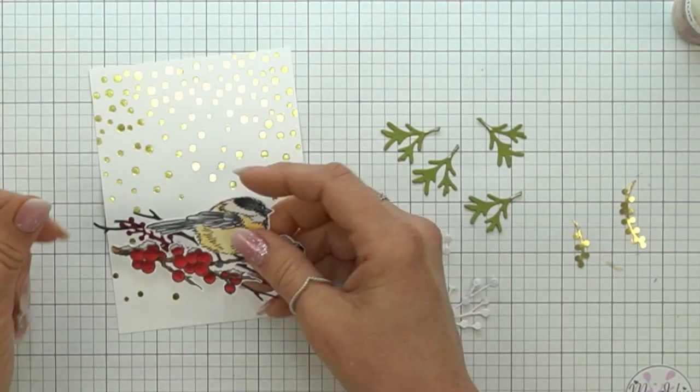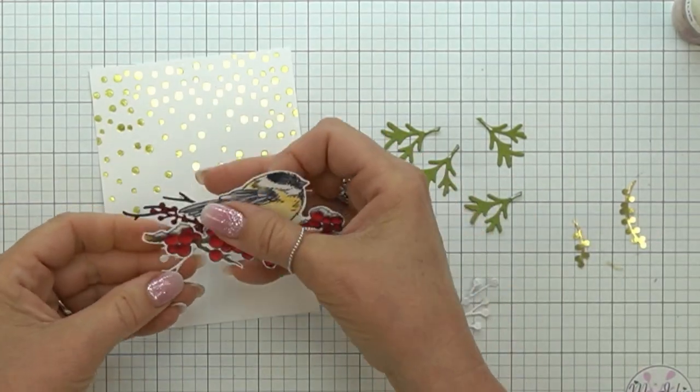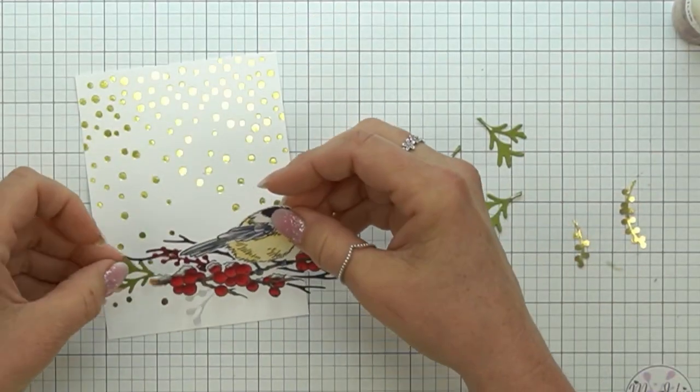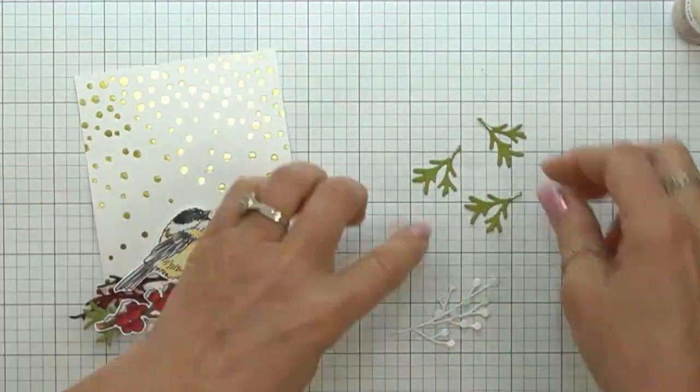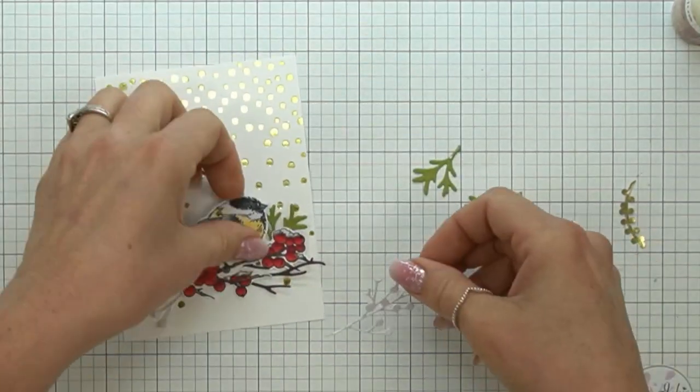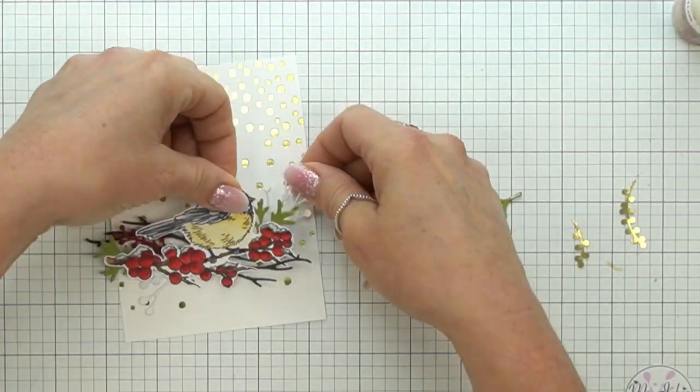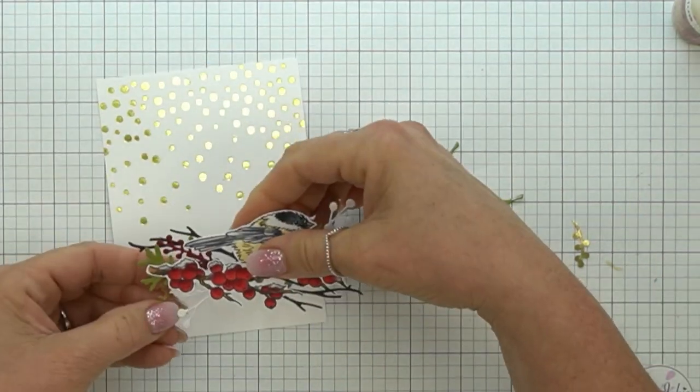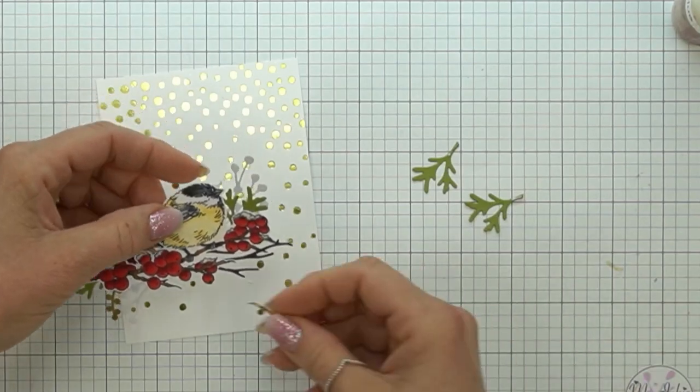I'm just going to start piecing things in. What I like to do is put the glue on the top of the piece because then as I piece it in, I can kind of see where it's going to go. I can lift my little bird up—nothing is stationary. I'm putting them all in and just eyeballing it.